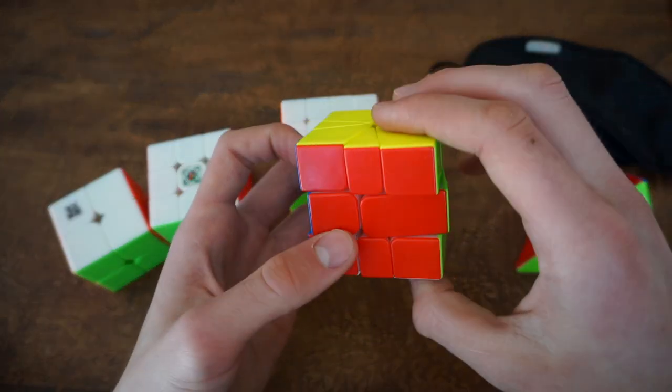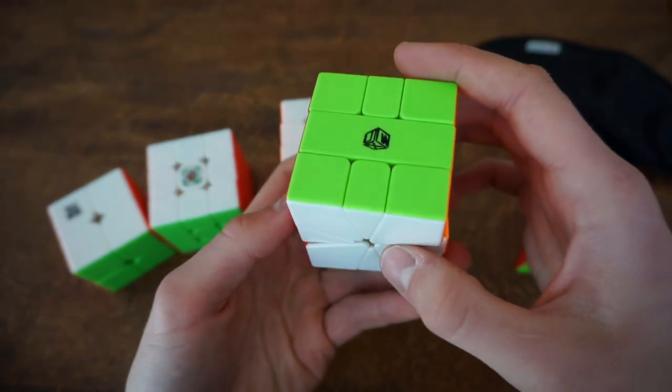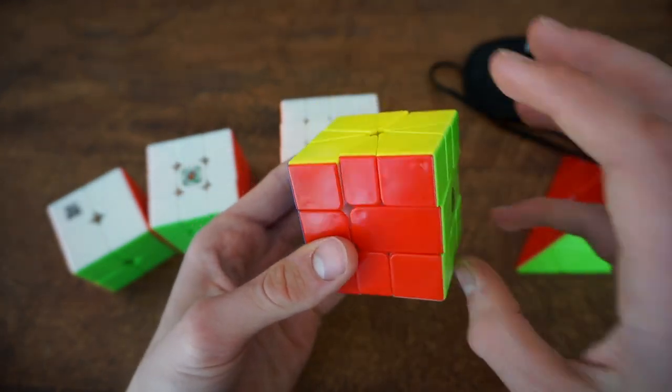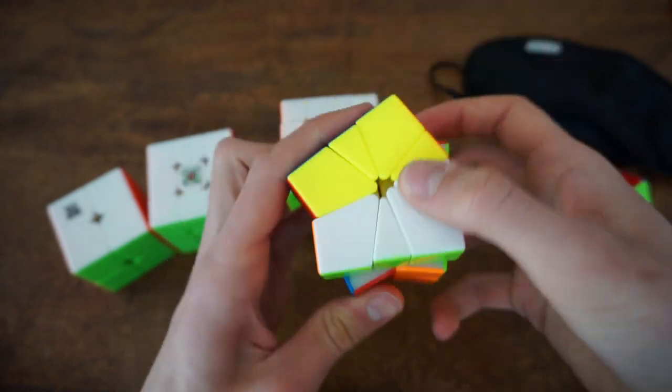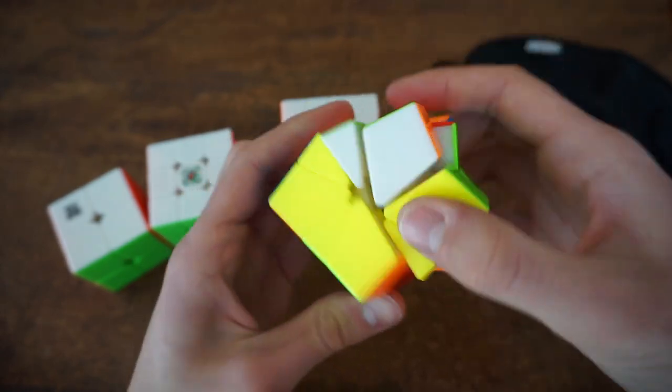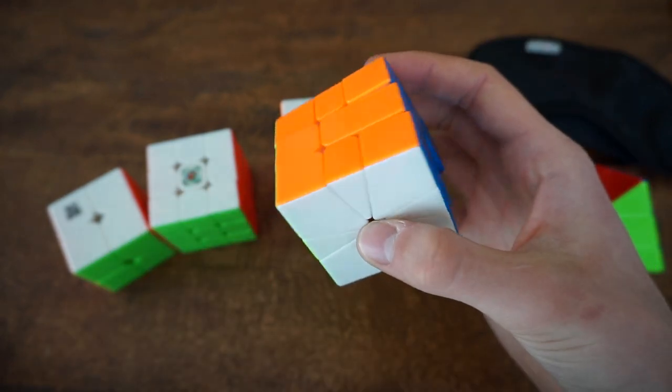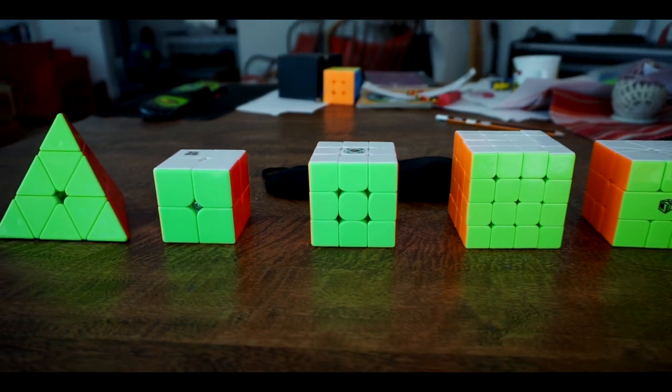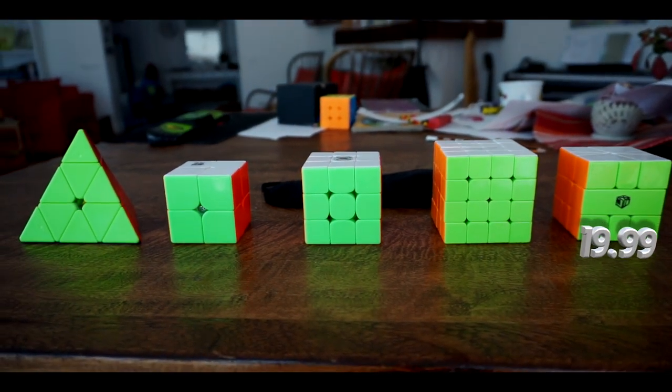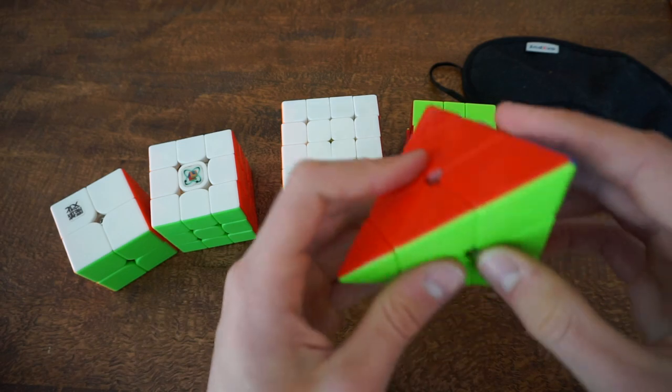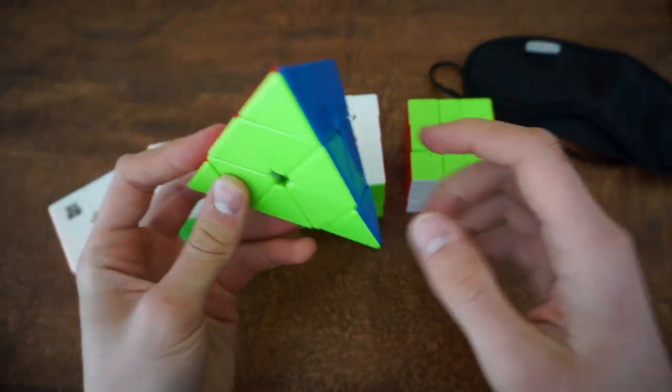So this is Square-1, the Chi Ball Square-1. My goal is to get a sub-20 average, and that should be quite easy for me because my average of 100 is sub-20, so we'll see how things turn out for that. Also get first place.